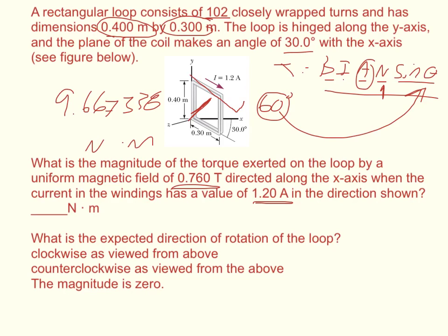Now the direction, which way is it going? You're going to point your fingers downward, and you're going to curl them towards the magnetic field, and your thumb should be sticking out away from the screen, so the force is coming out of the screen. That means if I'm looking at it from above, it's going this way, which is clockwise. So this is clockwise when viewed from above.